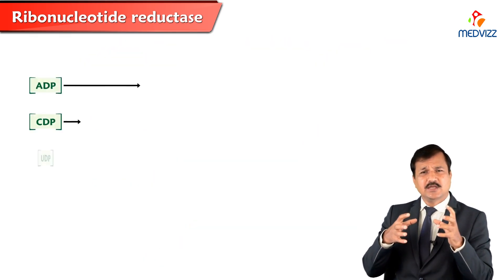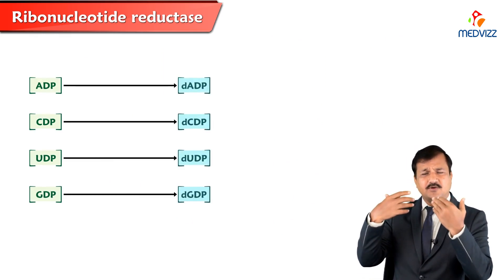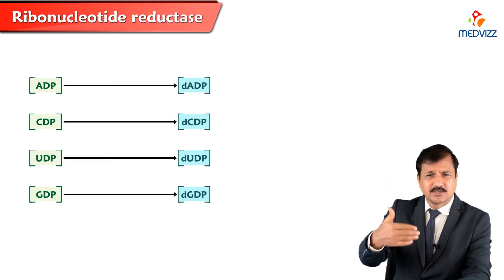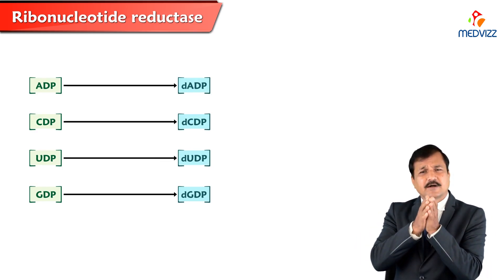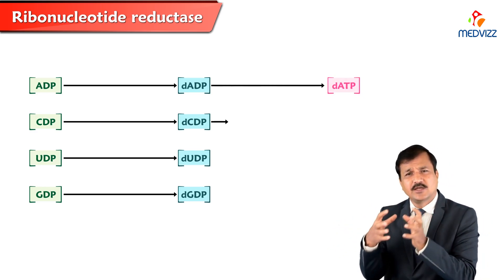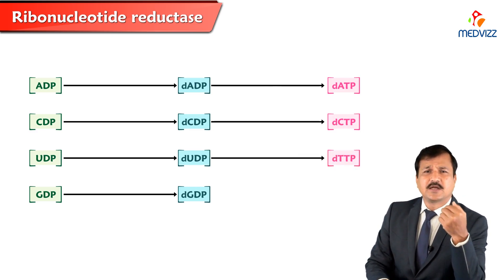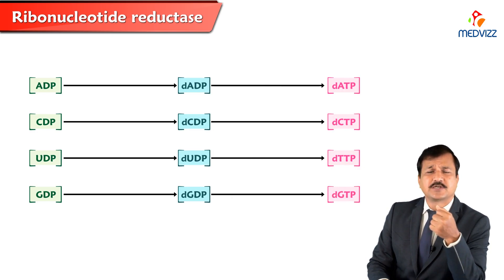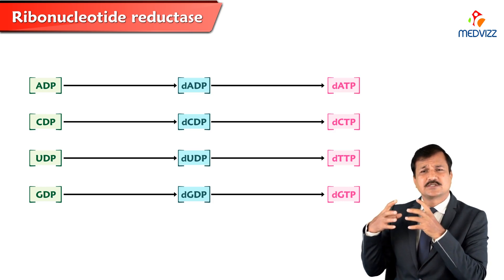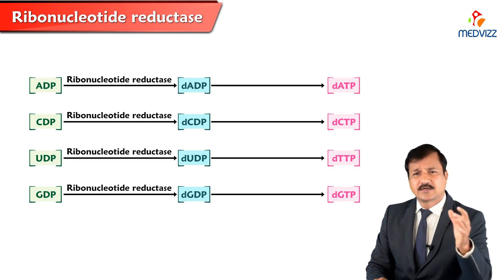Once we get deoxynucleoside diphosphates, these can be converted into deoxynucleoside triphosphates. These include deoxy-ADP converted to deoxy-ATP, deoxy-cytidine triphosphate, deoxy-thymidine triphosphate, and deoxy-guanosine triphosphate. This is how all the necessary substrates for DNA synthesis are made available by the action of ribonucleotide reductase.